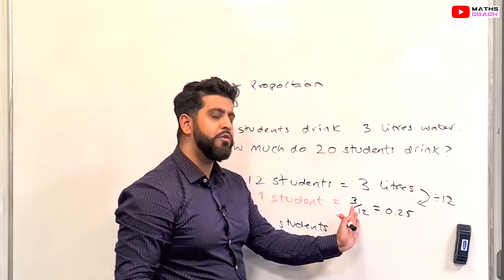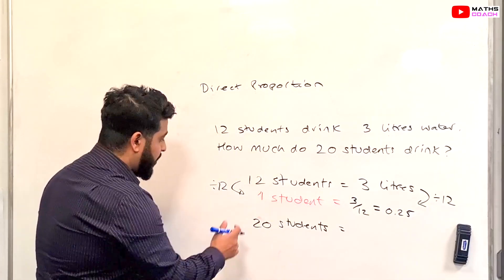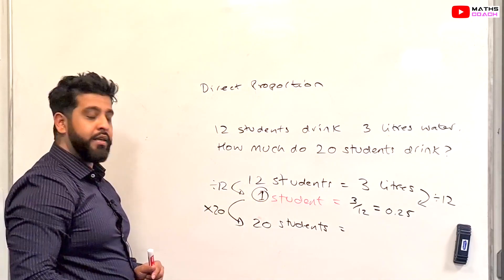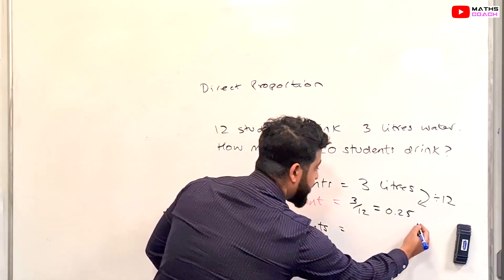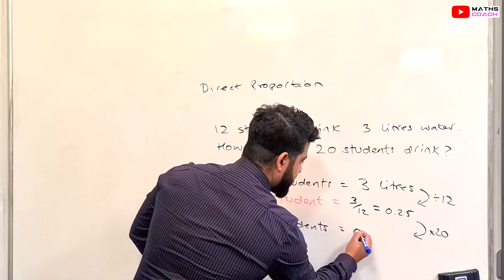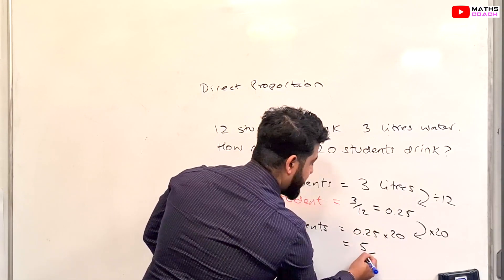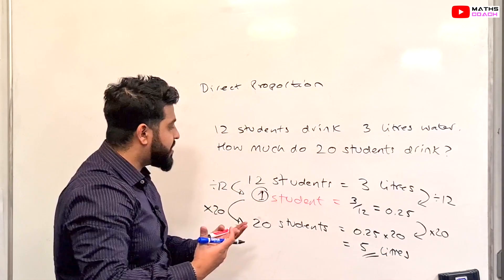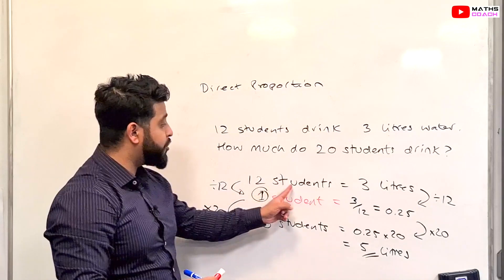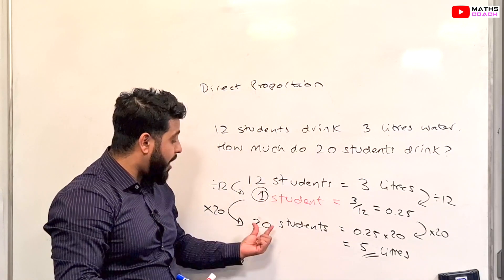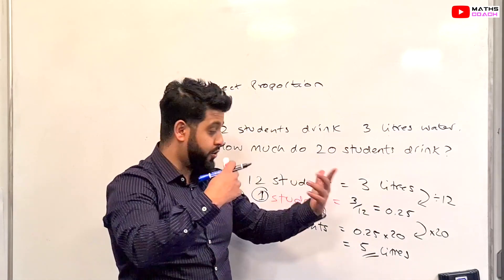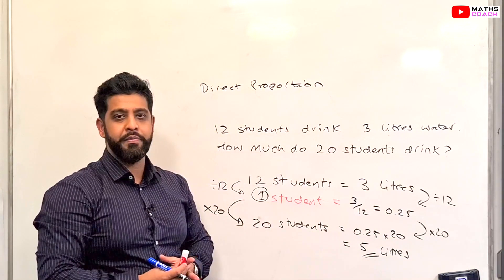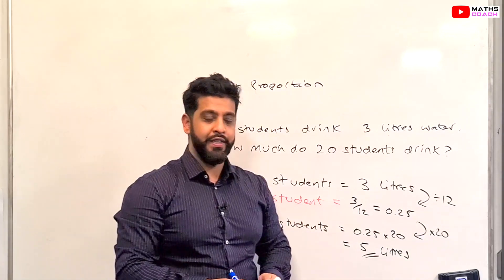3 divided by 12 gives us 0.25. Now how does 1 go to 20? We multiply by 20. With direct proportion, we also multiply the other side by 20: 0.25 times 20 equals 5. So 20 students need to drink 5 liters of water. As a quick check: 12 is almost half of 20, so the liters almost double — 5 is almost double 3, so it makes sense.